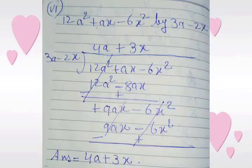Sub-part 6: 12a squared plus ax minus 6x squared divided by 3a minus 2x. We multiply 3a minus 2x with 4a and get 12a squared minus 8ax. We change the sign of the last line — the first term is cancelled — and after solving the second term we get plus 9ax.